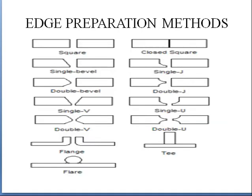Edge preparation is done to increase the strength of the weld joint. Depending upon the thickness of the material, we choose the edge preparation method. If the thickness is less, the edge preparation can be small — such as a V or square shape. But if the thickness increases, we need higher edge preparation methods like double-V and double-U, so that the deposition of weld in those areas increases and the strength of the weld also increases.